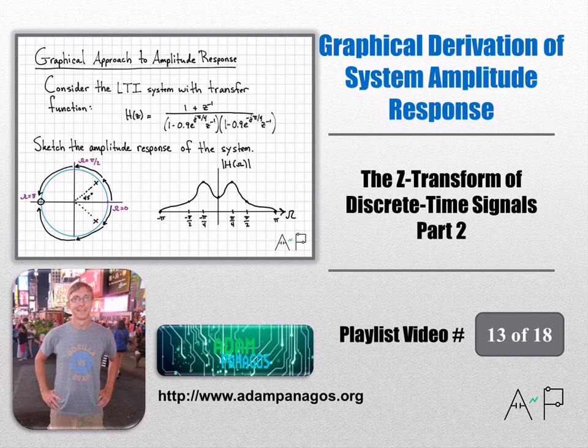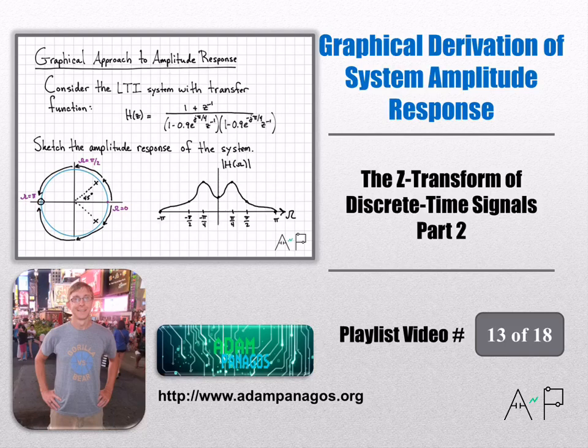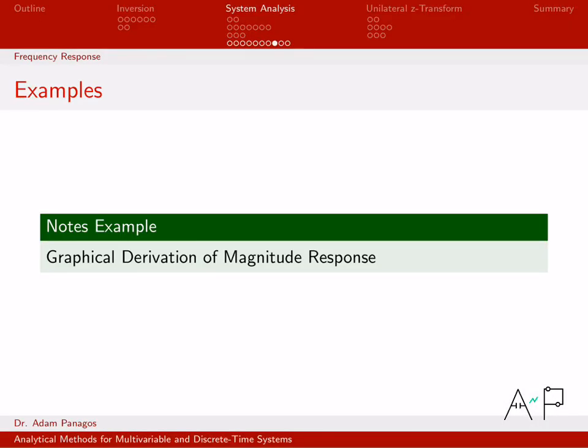In the previous video, we derived some nice expressions for the amplitude response and phase response of a discrete time system. In this example, we're going to work a very specific example where we derive the amplitude response or sketch the amplitude response using what I call the graphical approach. This approach isn't horribly precise, but if you are without a calculator or without MATLAB or whatever you prefer to do your plotting in, it is a really good way to get the general characteristics of a system figured out. Let's go ahead and work this example.